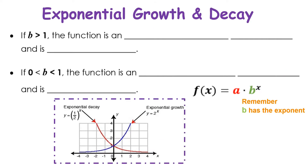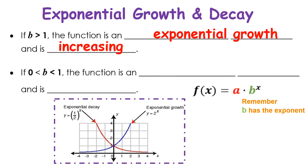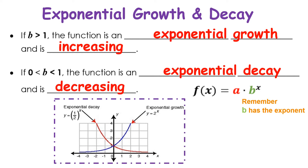For exponential growth and decay: if b is greater than one, then the function is exponential growth and it is increasing. If b is between zero and one, then the function is exponential decay and it is decreasing. Looking at the graphs, exponential decay falls from left to right, and exponential growth goes up from left to right. Remember, b has an exponent — that is how you identify your b value.